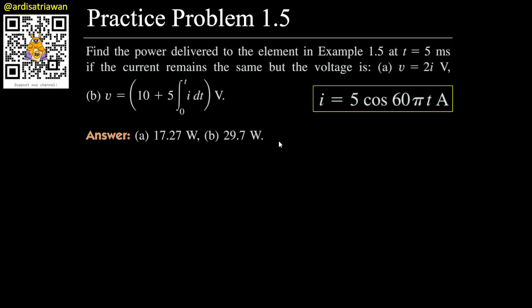In example 1.5, the current i is equal to 5 cosine(60π × t) amperes. At t = 5 milliseconds, if the current remains the same but the voltage is: (a) v = 2i, and (b) v is given by another formula, we need to find the power. Let's start with part (a).